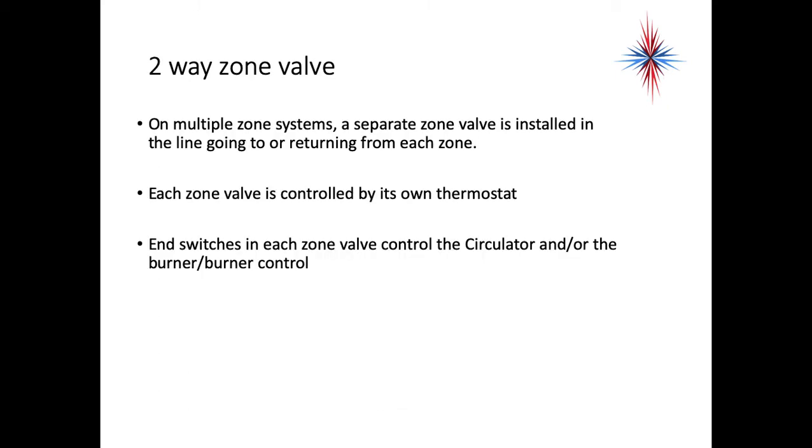On multiple zone system, a separate zone valve is installed in the line going to or returning from each zone. Each zone valve is controlled by its own thermostat. End switches in each zone valve control the circulator and or the burner-burner control. We do not want to energize the circulator if none of the valves are open, nor do we want to have the boiler heating the water or the chiller chilling the water if there's no place for it to go. It doesn't make sense.